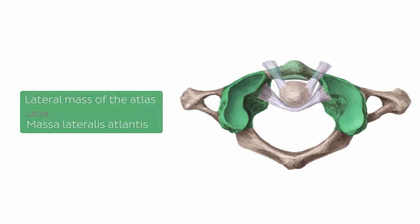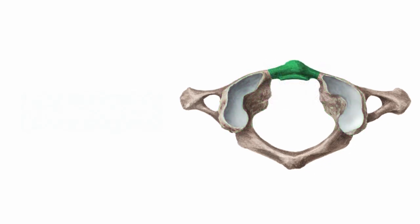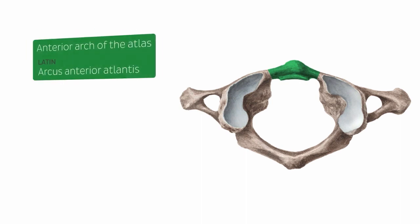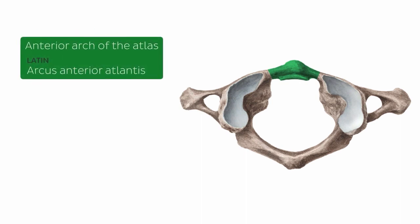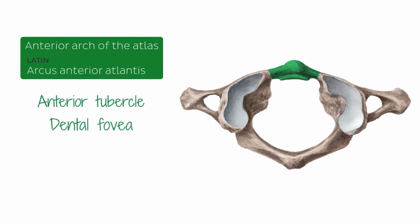The next structure we're going to be highlighting is known as the anterior arch of the atlas. The anterior arch of the atlas has an anterior tubercle and a dental fovea.